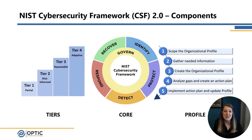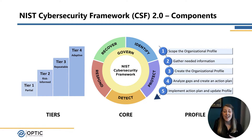The cybersecurity framework has three primary components: the core, the tiers, and the profiles. The core is a set of cybersecurity outcomes that can be used to understand what you need to do in your cybersecurity program. The implementation tiers are a tool for measuring how well you're managing those capabilities and therefore your cybersecurity risk. Which leads us to the profiles, which are the mechanisms for capturing what you're doing today and what you think you need to be doing in the future.